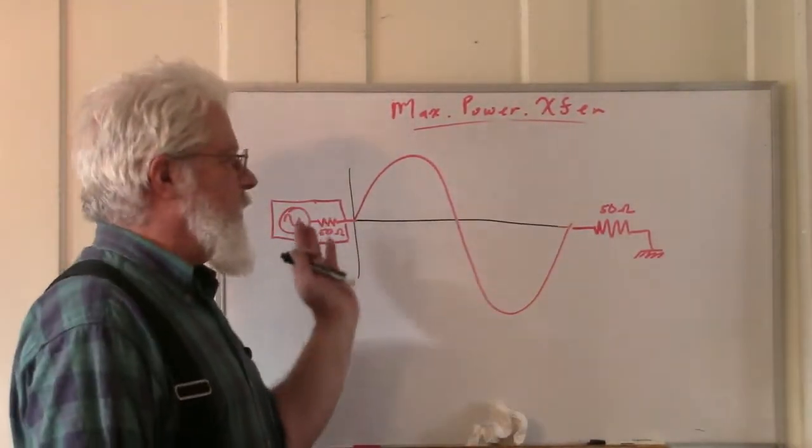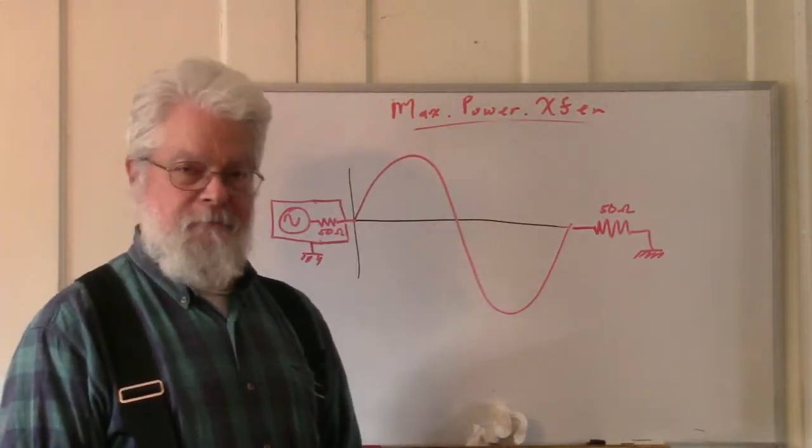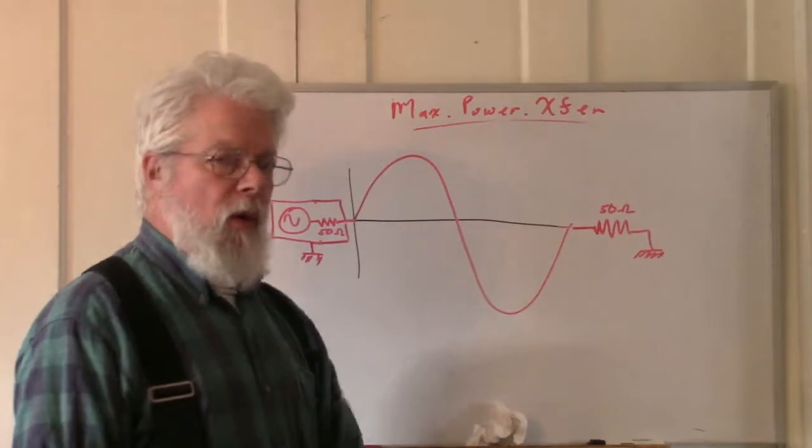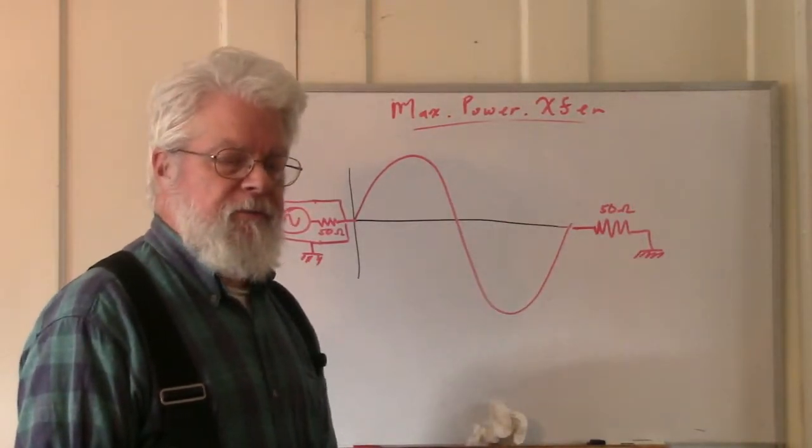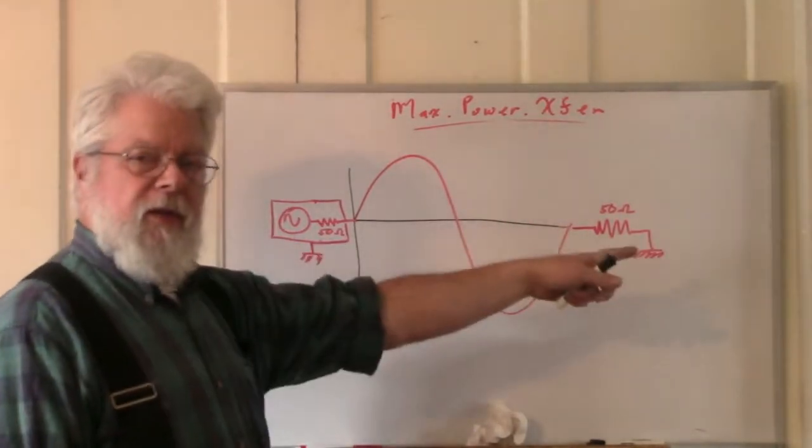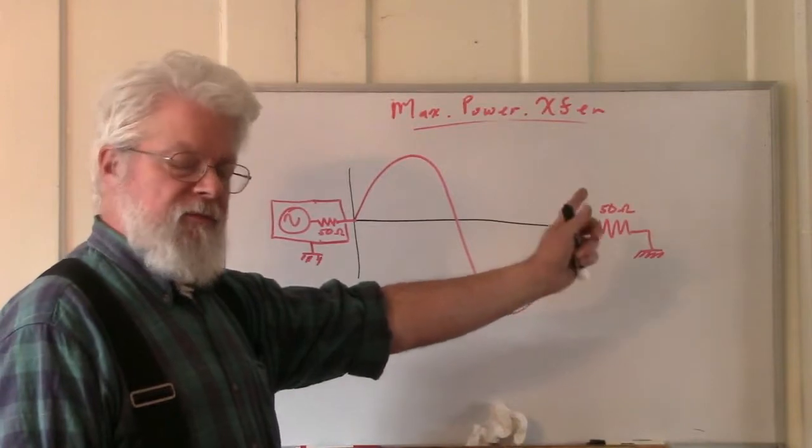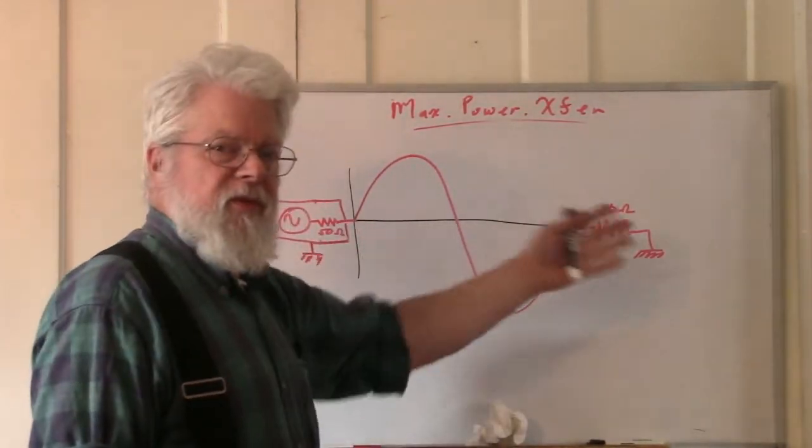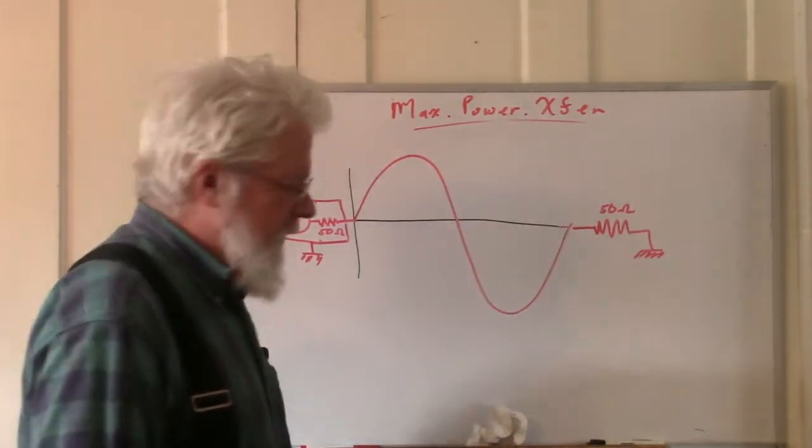Okay, back to this. So here we have a condition where the source matches the load and everybody's happy, right? Well, it turns out that the transmission line also needs to have an impedance that matches both the line and the load. Why is that? You think it's not transparent? It doesn't really matter? Turns out it does.